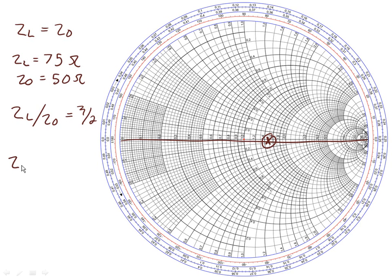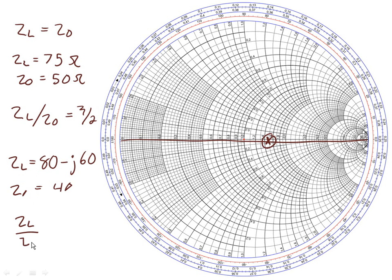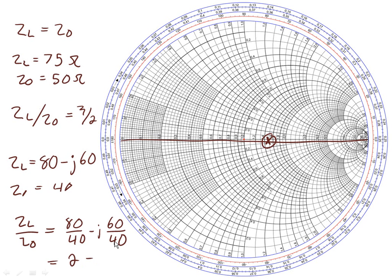Let's take a look at a complex load impedance. Z_load is equal to 80 minus j60 ohms, and Z_0 is equal to 40 ohms. Then Z_load over Z_0 equals (80 minus j60) over 40, which equals 2 minus 1.5j.